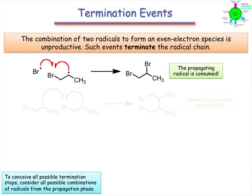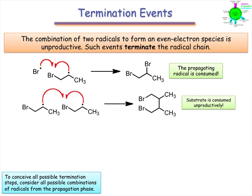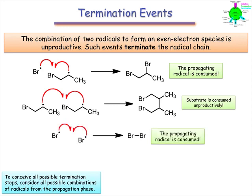In the second example, two molecules of alkyl radical combine to give a C-C coupled product. Here, substrate is consumed, but no new radical is generated, leaving some HBr unreacted. The final example is a simple coupling of two Br-radicals to form elemental bromine.